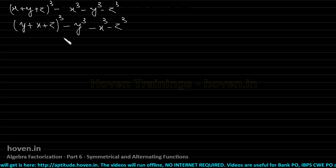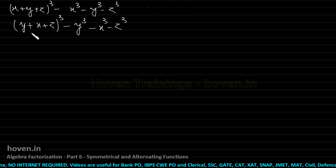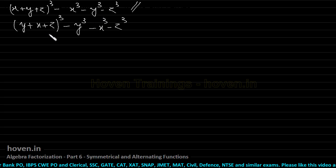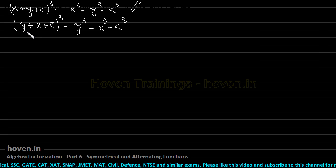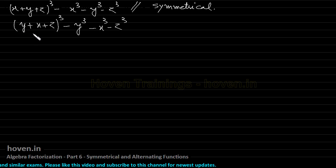Note that the test must be done for each pair. But when we can see at first sight that it looks symmetrical, just for verification you can interchange one pair, and if that works, then most probably the whole expression is going to be symmetrical. Because we can trust our eyes — if it appears symmetrical, just one test is required, and you can say that this is a symmetrical expression.